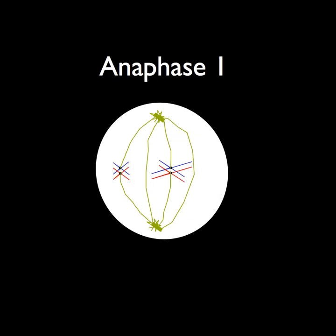This is the beginning of anaphase. In anaphase, the spindle fibers pull one of its chromosomes from the homogelous pair to each end of the cell. Also, cell membranes begin to stretch.